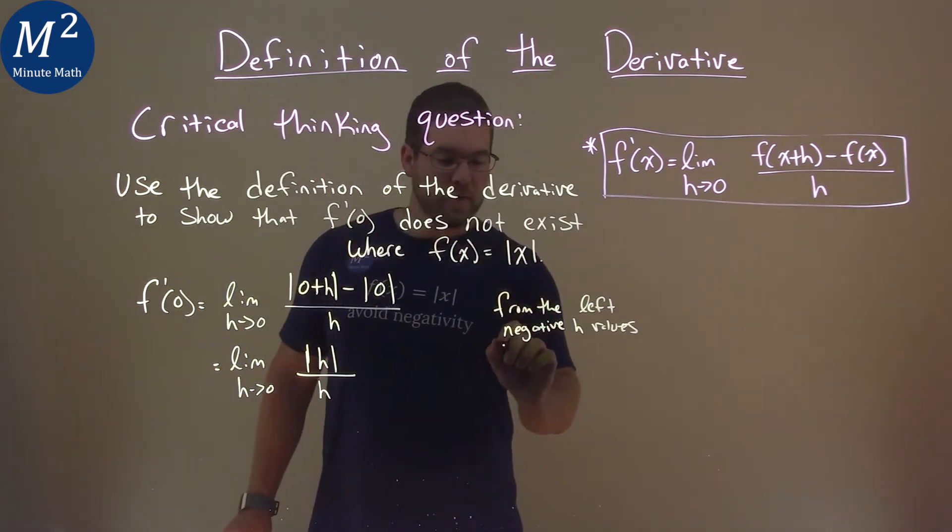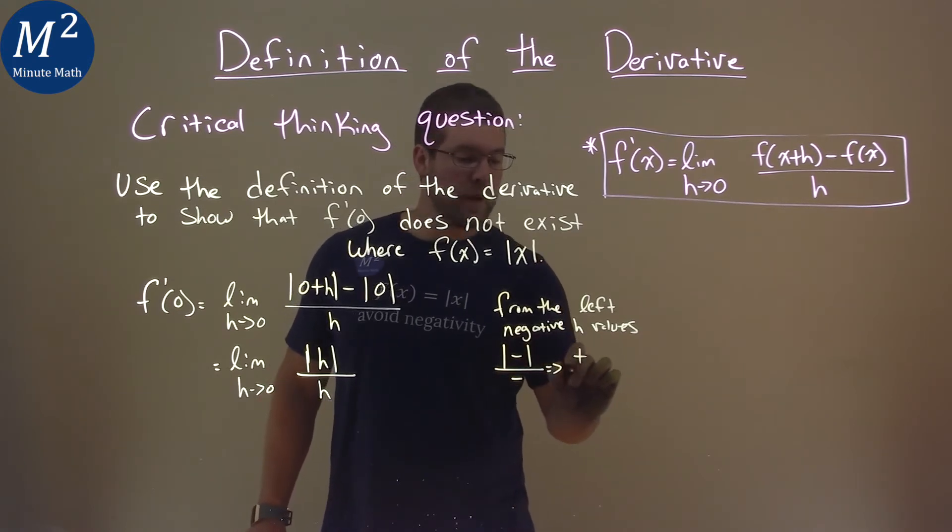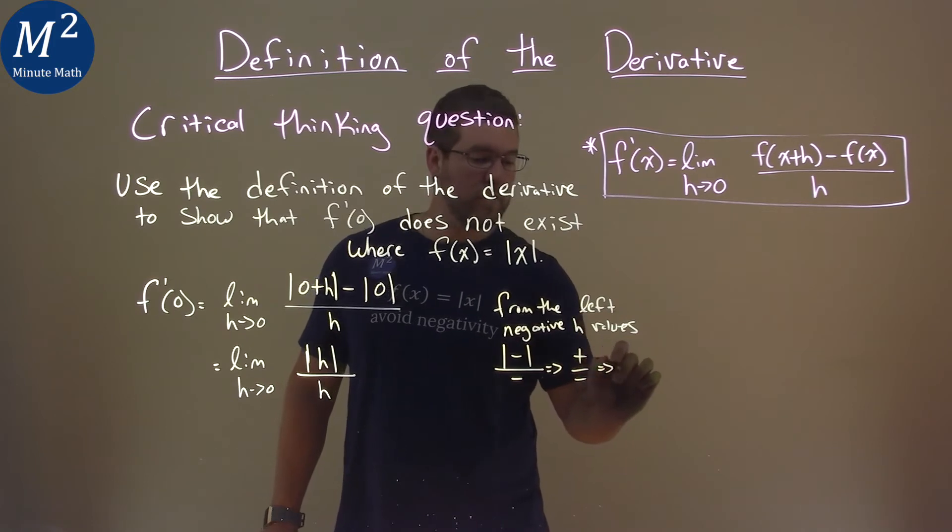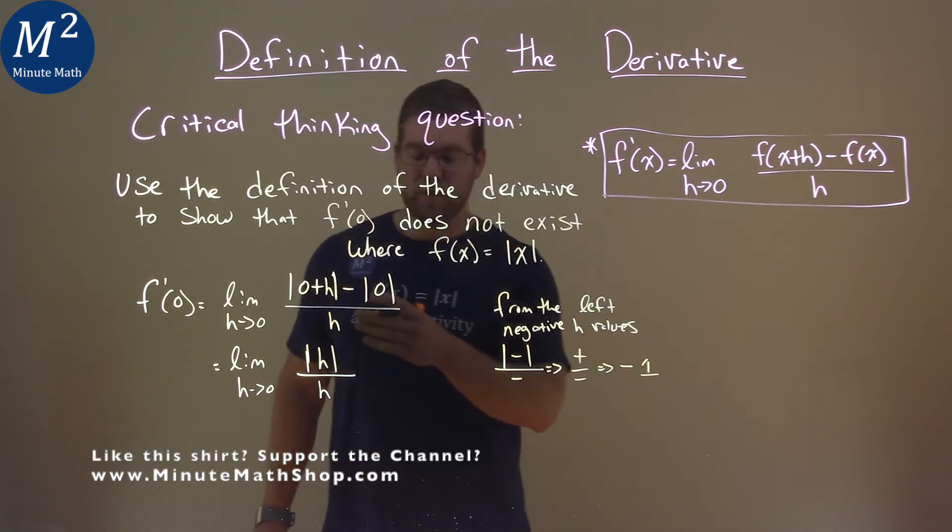We have the absolute value of a negative number, basically over that negative number. Absolute value of a negative becomes the positive. We have positive over negative, and overall, this becomes a negative. And it's a negative one because it's over itself.